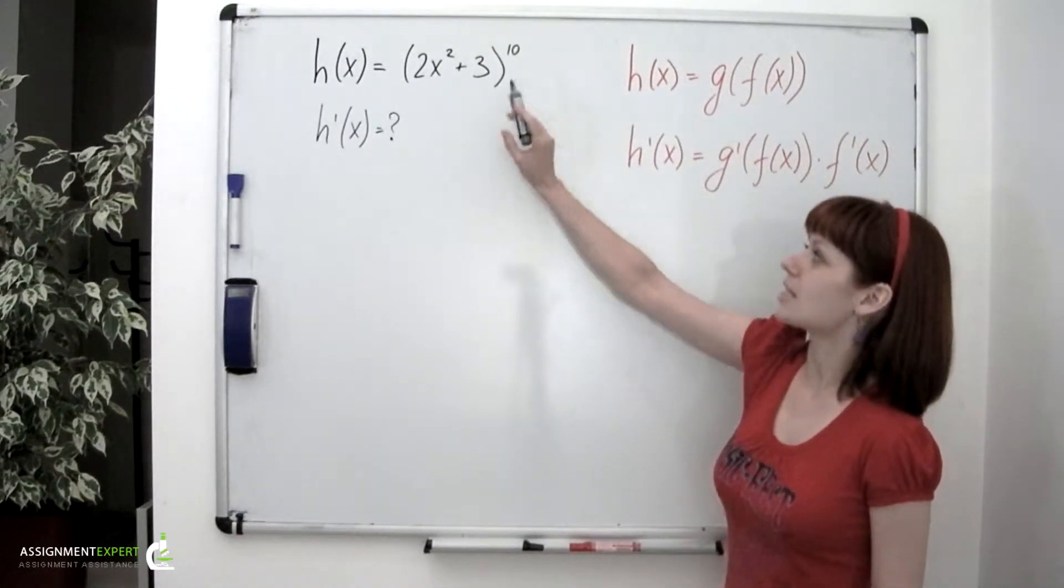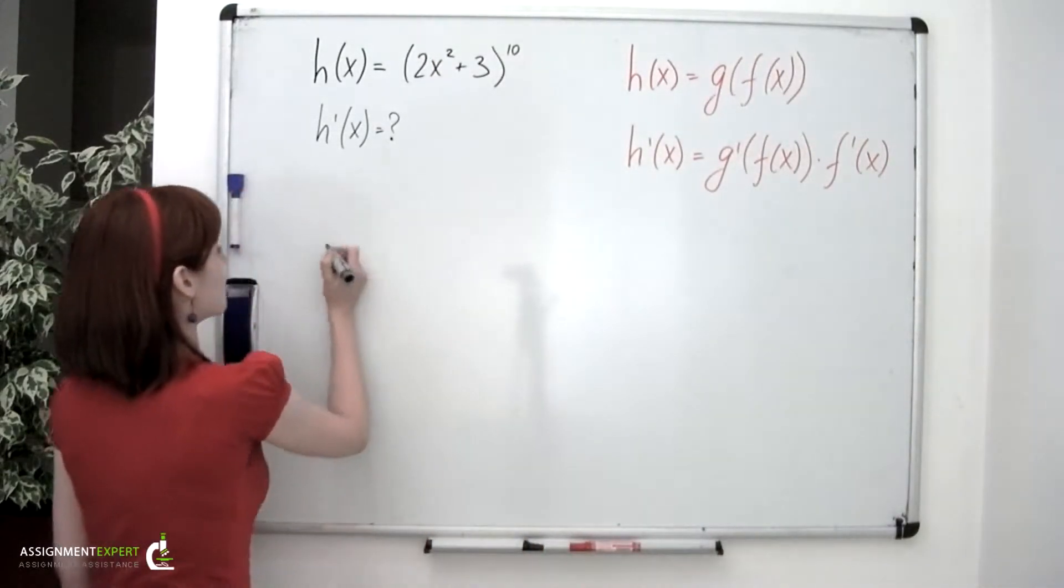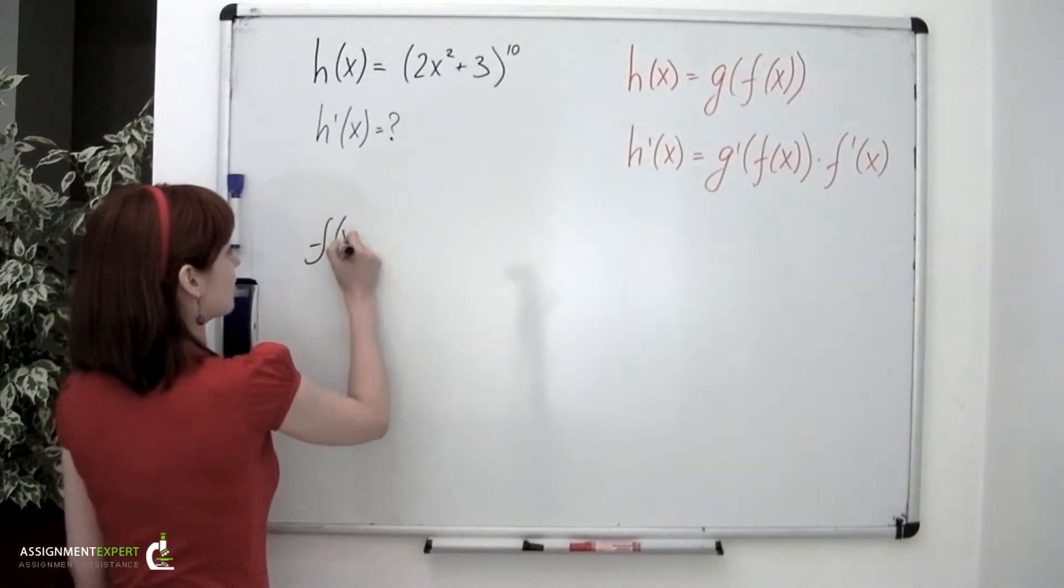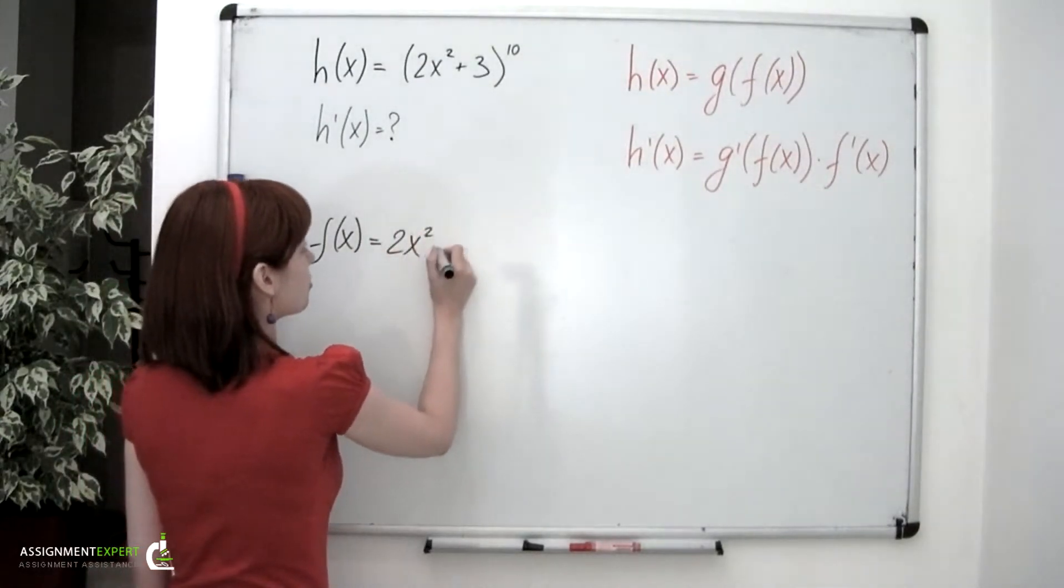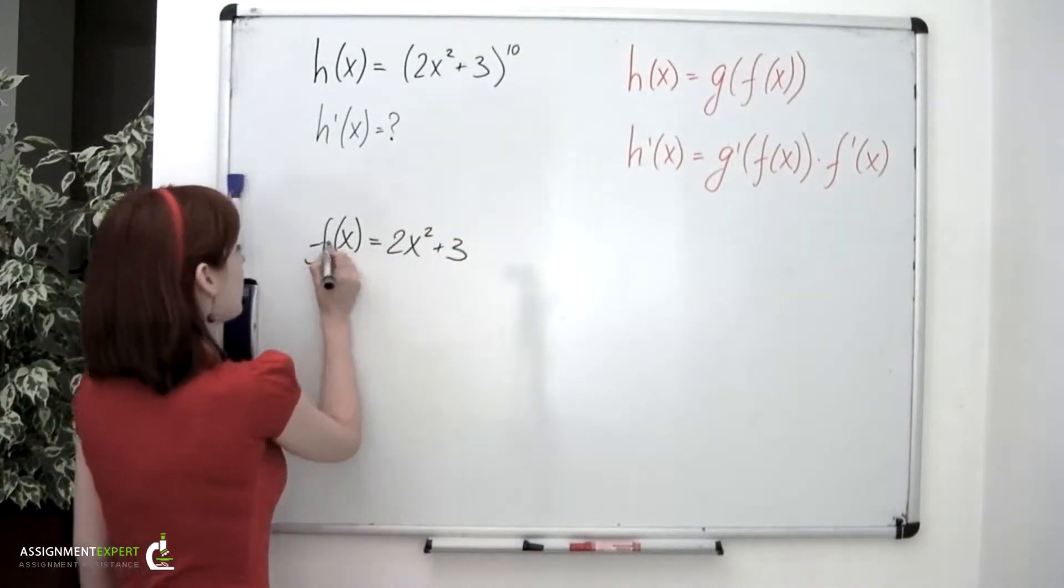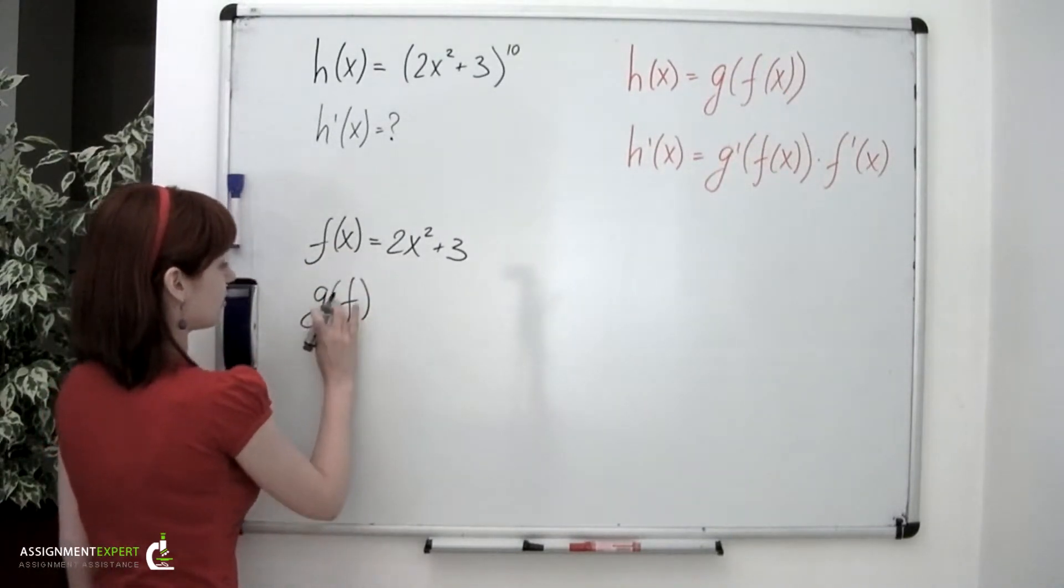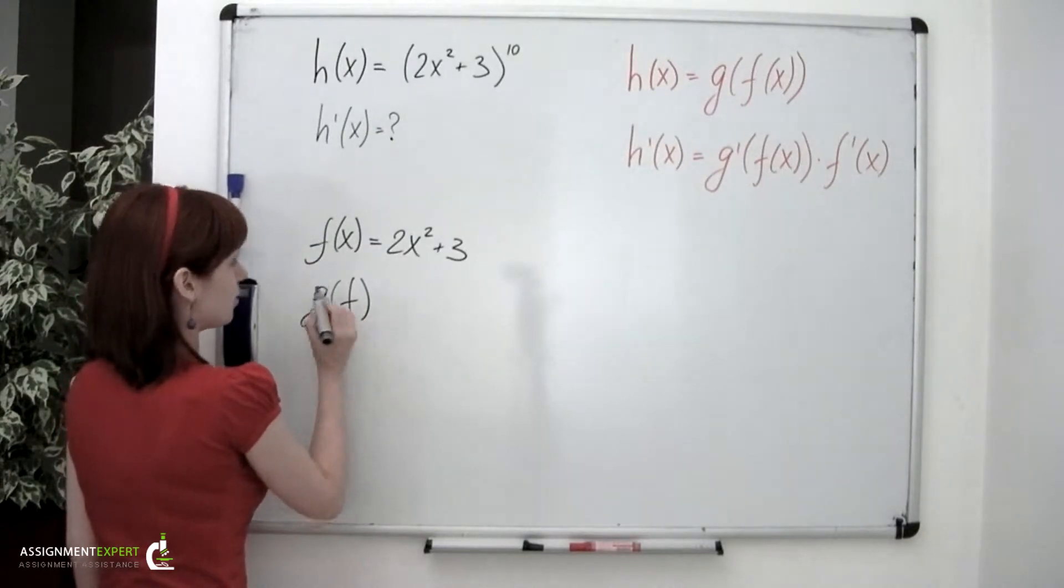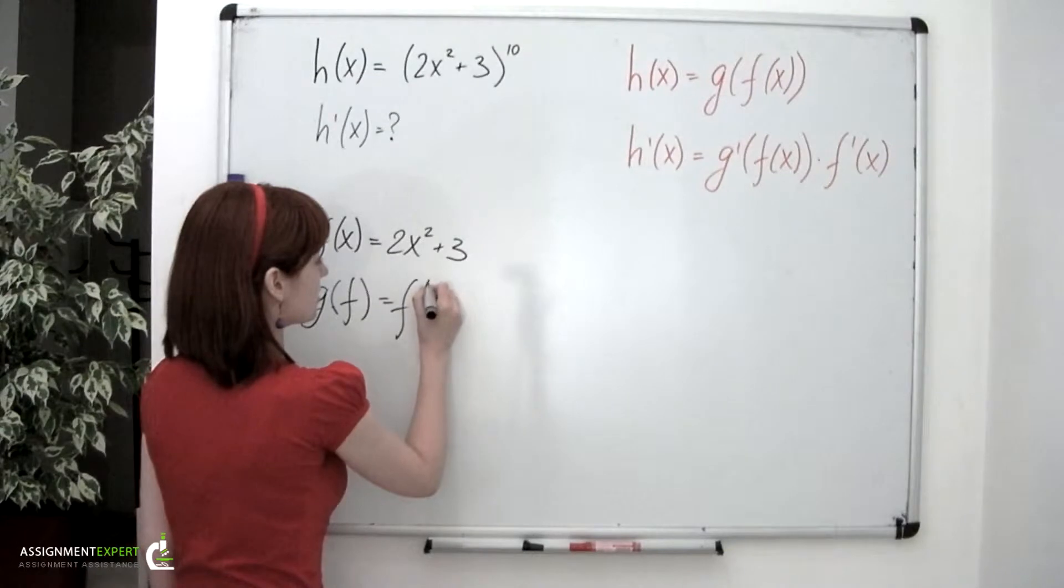So this means that the inside function will be this polynomial. So our f of x will be equal to 2 times x squared plus 3. And the outside function, g of f, is the 10th power. f raised to 10th.